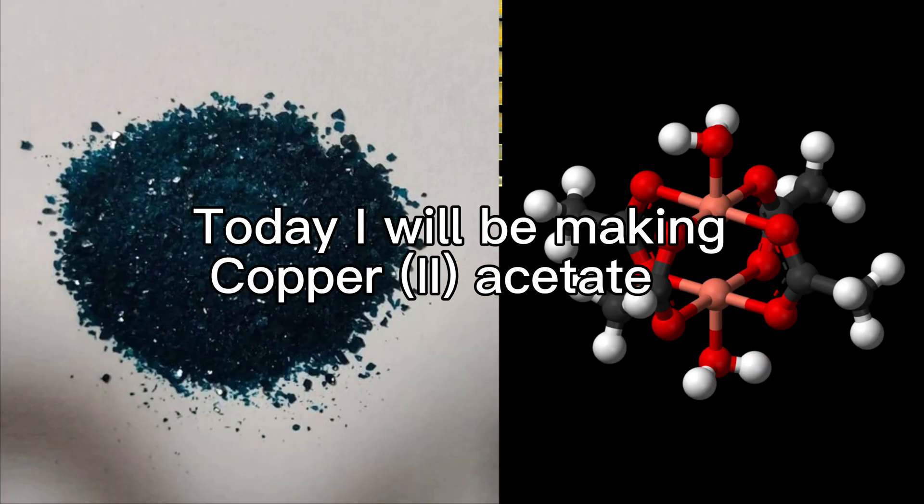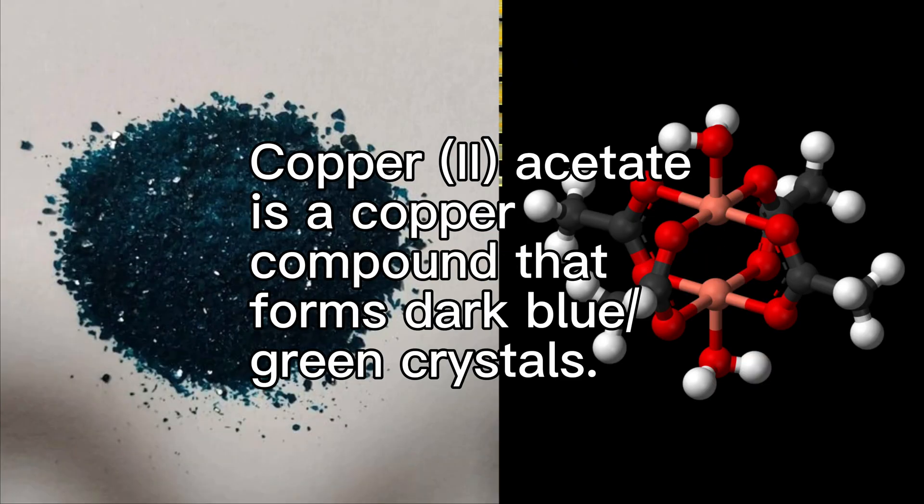Hello everyone, Niall Yellow here. Today I will be making copper-2-acetate. Copper-2-acetate is a copper compound that forms dark blue-green crystals.